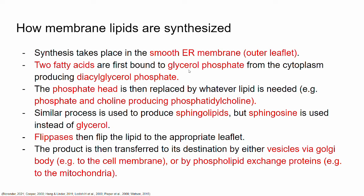To summarize: these two precursors bind together making diacylglycerol phosphate, which becomes part of the membrane. Then the phosphate head is replaced by whatever lipid the cell needs. If it needs phosphatidylcholine, the phosphate is replaced by phosphate and choline. If the cell needs phosphatidylserine, it's replaced by phosphate and serine. If it needs phosphatidylinositol, then phosphate and inositol, and so on.